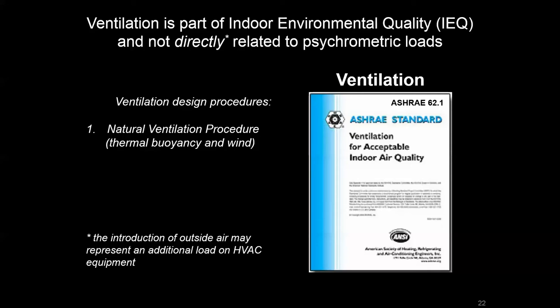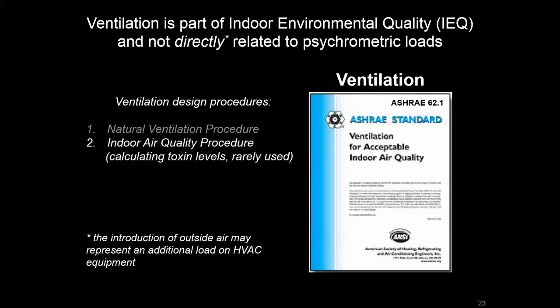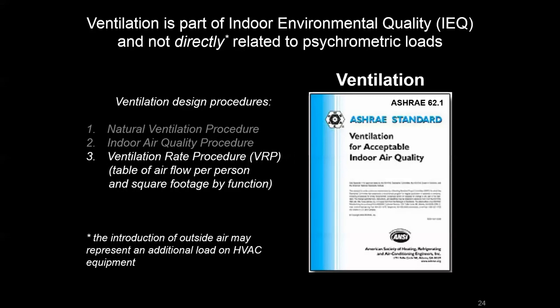Natural ventilation works by understanding how air moves from outside through penetrations and naturally takes hot air out of the building. There's also a way to calculate toxin levels directly and determine how much fresh air needs to be introduced — that's the indoor air quality procedure, which is also rarely used and more applicable to specific lab or manufacturing environments where you have a good understanding of toxin levels. The third procedure, which drives most ventilation design, is the ventilation rate procedure, or VRP.